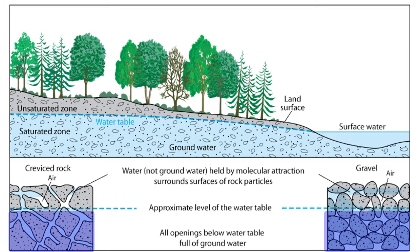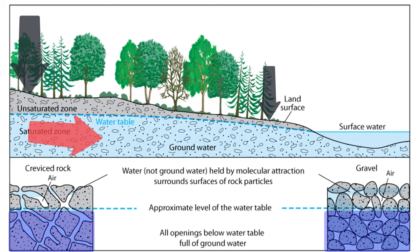The other factor that influences groundwater flow is differences in pressure, or the overlying weight of the rock. Groundwater will flow away from the area with the greatest pressure above it — the greatest weight of overlying rock — and toward the area with the least pressure, the lowest weight of overlying rock.